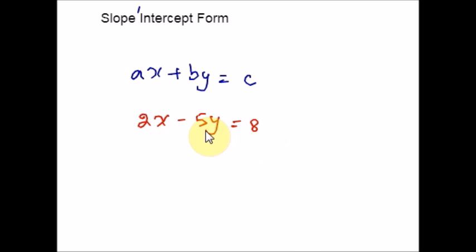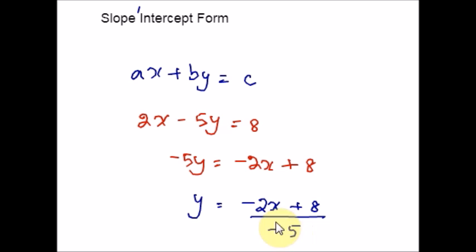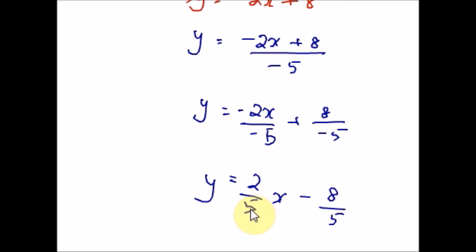Let me take one example and explain how to find the slope and intercept from the general form. I am going to shift the x term to the other side by subtracting 2x from both sides. I have kept the positive 8 here and written the negative 2x as the first term. Now divide the entire equation throughout by negative 5 to isolate y on the left side. Negative 5 is the common denominator, so I write negative 2x over negative 5 plus 8 over negative 5. Negative over negative gives a positive, and positive over negative gives a negative. So we get 2 over 5 x minus 8 over 5. The slope is 2 over 5 (positive), and the y-intercept is negative 8 over 5. If you are going to graph this, you can also convert the fraction into decimals for easier graphing.